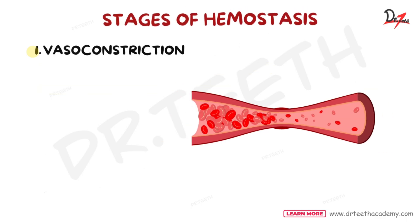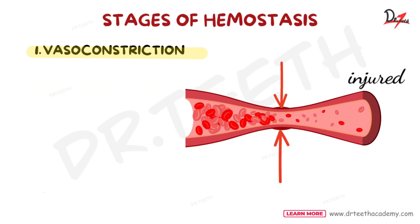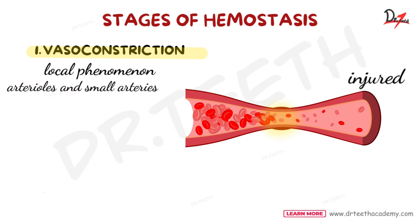In vasoconstriction, when a blood vessel is injured, it constricts like a tight squeeze to reduce blood loss. This is a local phenomenon — the constriction of the vessels happens at the site of injury and not throughout the body. Usually arterioles and small arteries constrict.